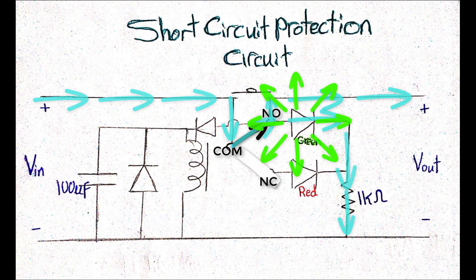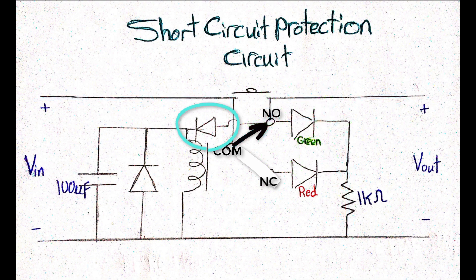But what about the remaining circuit components? First of all, we have this series diode, which will isolate the relay coil from the circuit output terminal. This shunt diode, on the other hand, is a freewheeling diode.